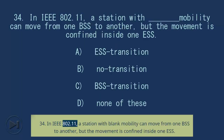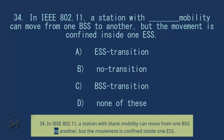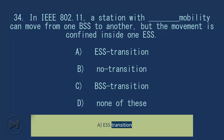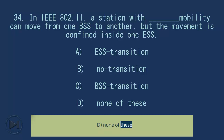Question 34: In IEEE 802.11, a station with blank mobility can move from one BSS to another, but the movement is confined inside one ESS. A. ESS Transition, B. No Transition, C. BSS Transition, D. None of these.